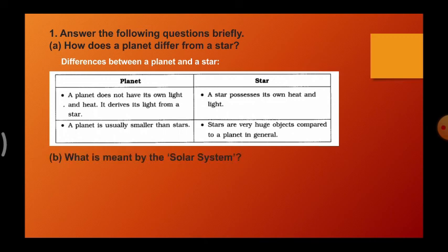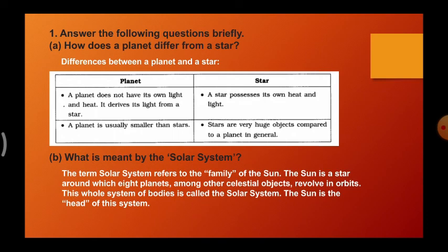What is meant by a solar system? The term 'solar system' refers to the family of the Sun. The Sun is a star around which eight planets and other celestial bodies revolve in orbits. This whole system of bodies is called the solar system. The Sun is the head of this system.